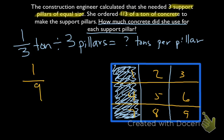So let's go back and say that if we have 1 third of a ton, we're going to divide it into three pillars. We're left with 1 ninth tons per pillar. So each pillar is going to get 1 ninth of a ton of concrete.